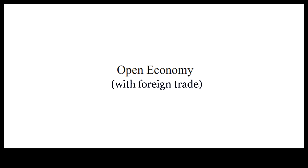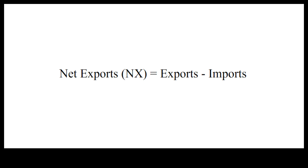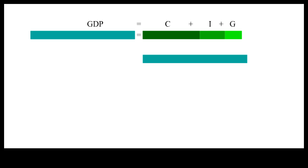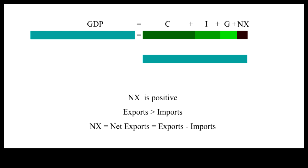In an open economy, some domestic goods and services would be exported, and some foreign goods and services would be imported. The gap between exports and imports is called net exports. NX must be added to consumption, investment, and government spending to make up the gross domestic product.